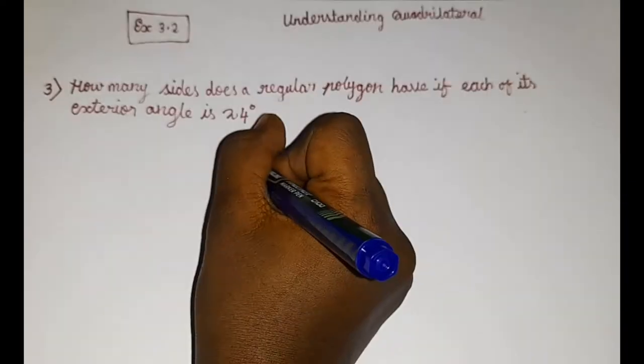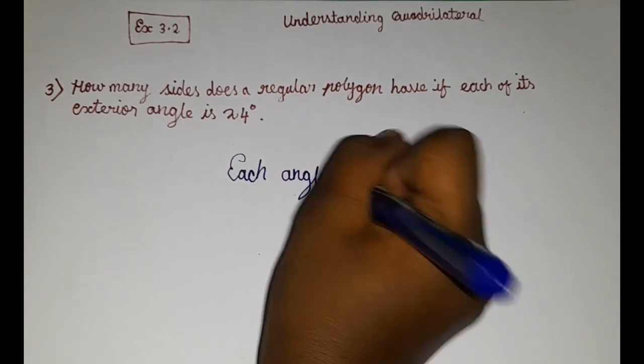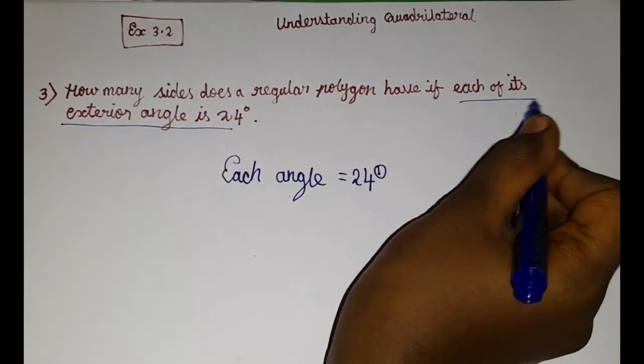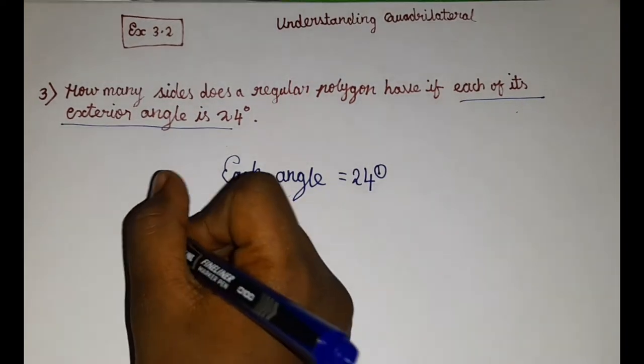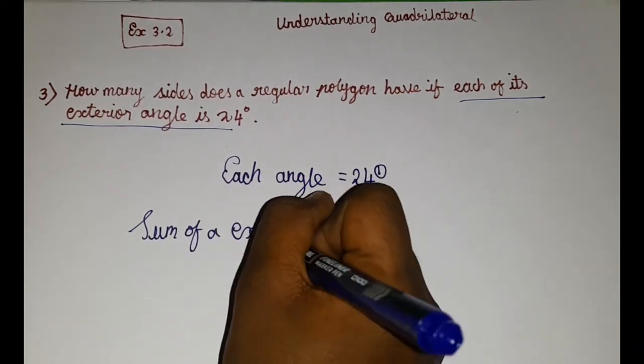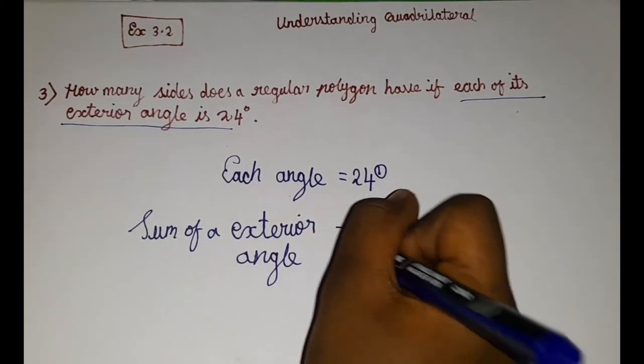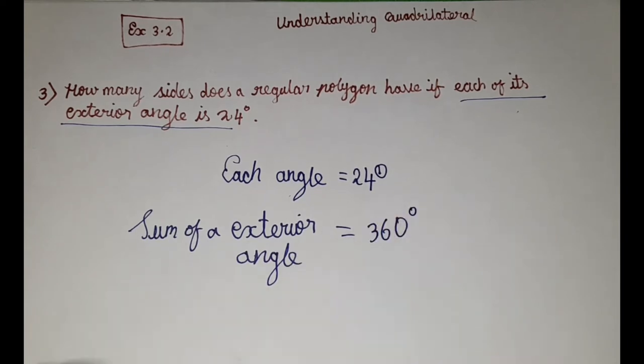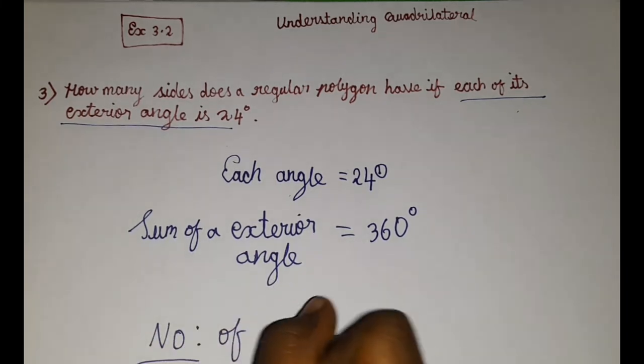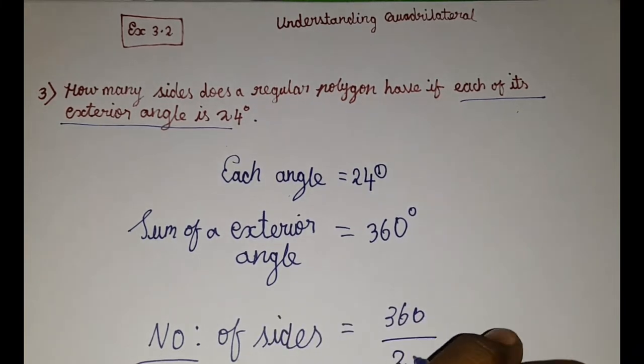So first, let's write each angle. Each angle is equal to 24 degrees. Okay, here it's there. Each of its exterior angle is 24 degrees. Next, sum of exterior angles. So what is the sum of exterior angles? 360 degrees. So number of sides is equal to 360 divided by 24.